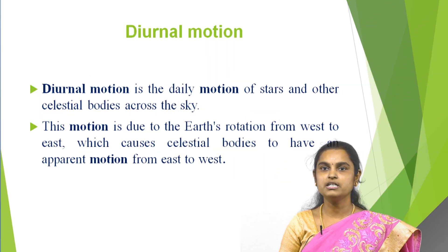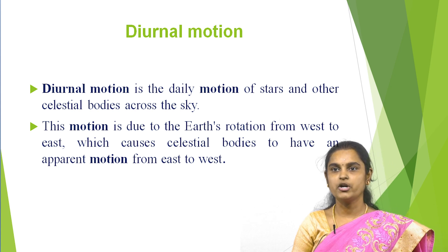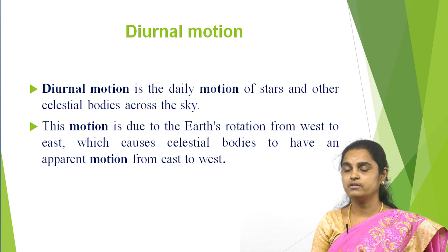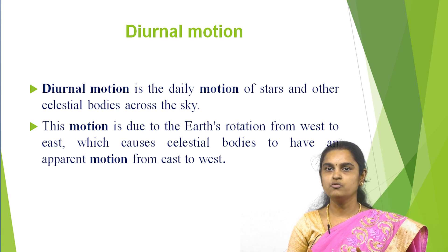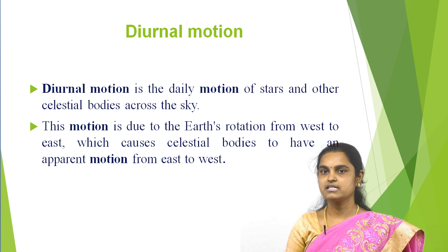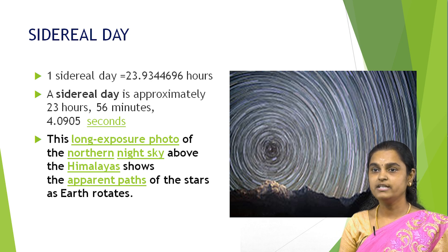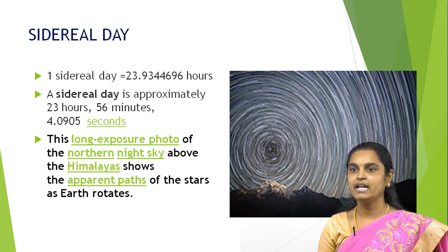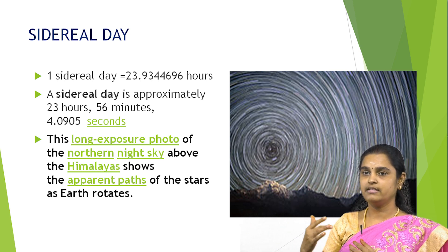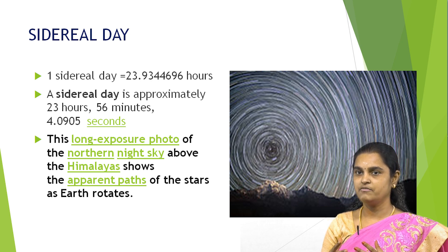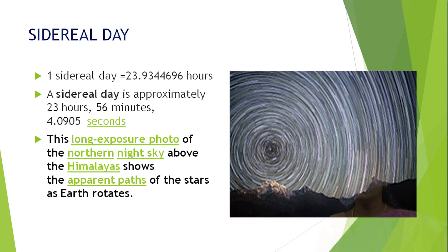Diurnal motion is a daily motion of stars and other celestial bodies across the sky. Celestial bodies include planets, stars, moon, etc. The motion is due to earth's rotation from west to east, which causes celestial bodies to have an apparent motion from east to west. This is a picture taken from the Himalayan region where the streaks of light show the motion of stars captured by scientists. One sidereal day equals 23.9344696 hours — approximately 23 hours, 56 minutes and 4.0905 seconds, not exactly 24 hours.